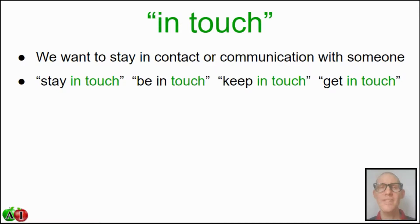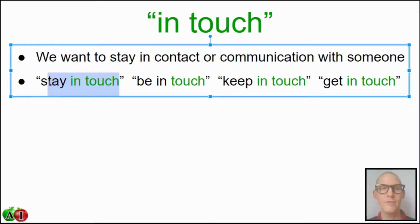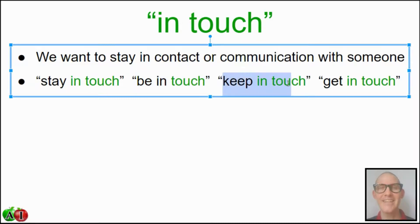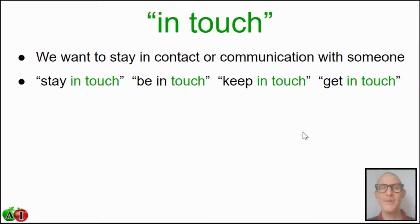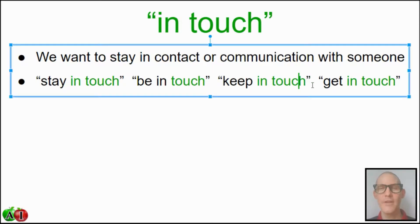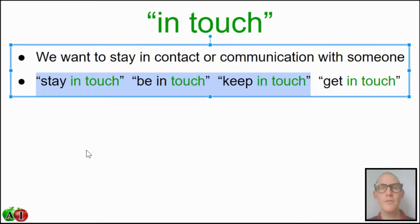We can use 'in touch' in different ways. We can say 'stay in touch' — I need to stay in touch with you. 'Be in touch' — I'll be in touch. 'Keep in touch' — Henry, please keep in touch with your mother. Or 'get in touch' — I'll get in touch with you. They all have 'in touch' in them and are very similar. The first three are basically about maintaining the relationship.